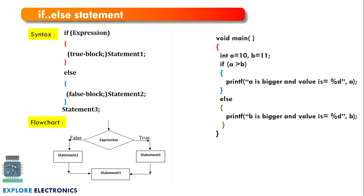Now let us understand the if-else statement. Unlike the if statement, here we also have an else condition. If the condition checked in if is not satisfied, what we need to execute is written in the else block. In the flowchart, if the expression is true, statement one is executed; if false, statement two is executed. After all this, statement three outside the block is executed irrespective of the expression's evaluation.